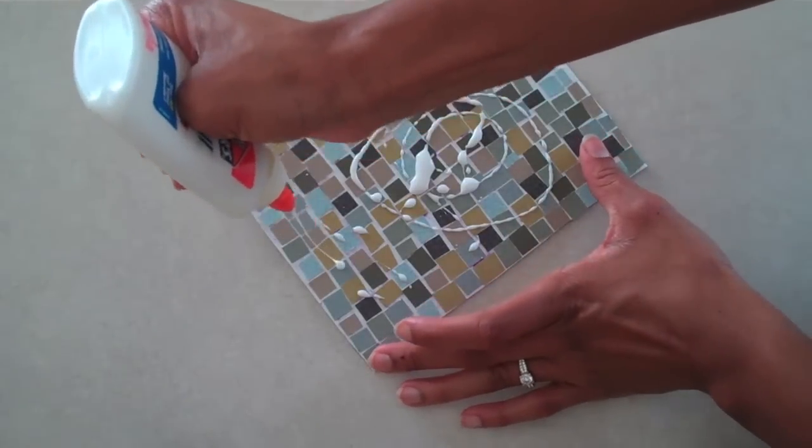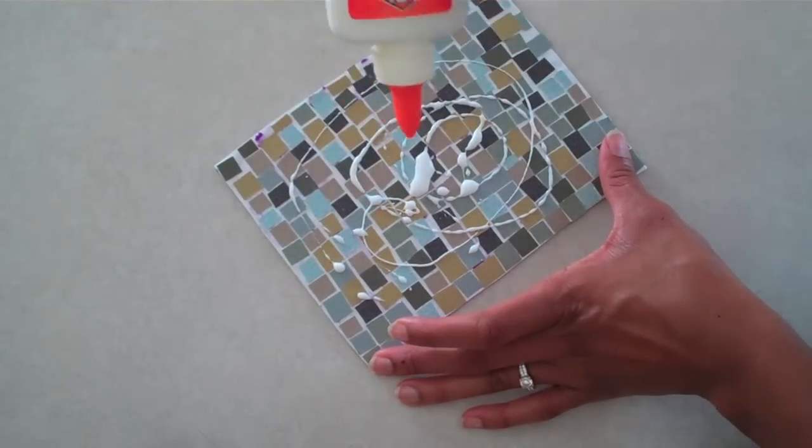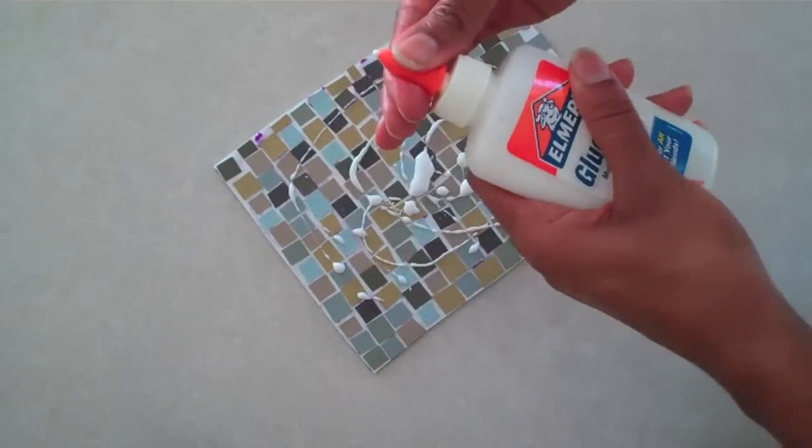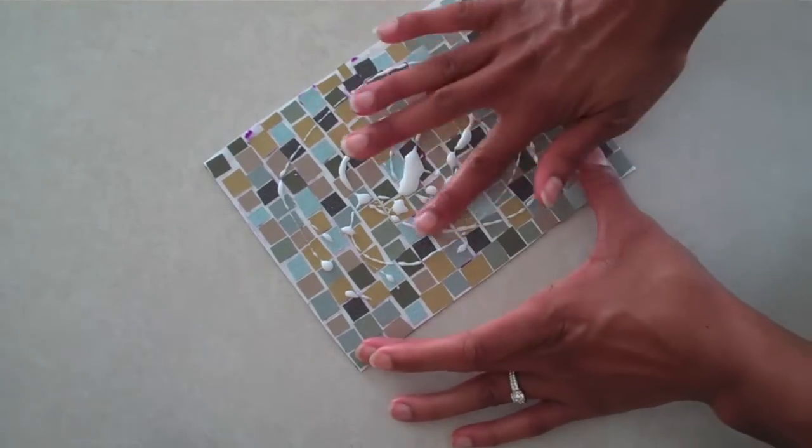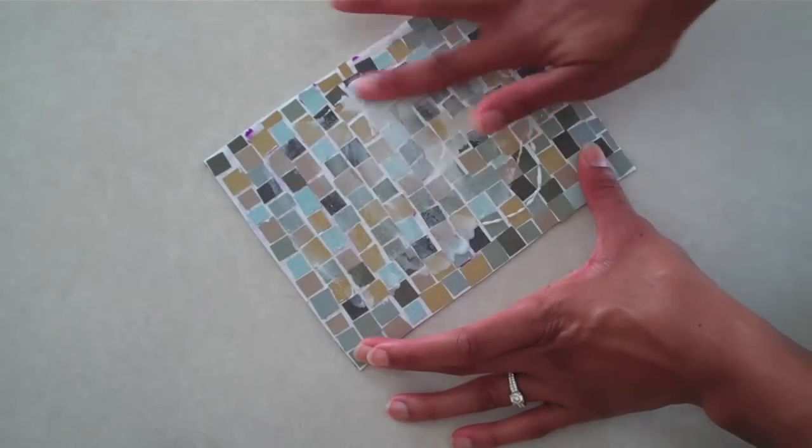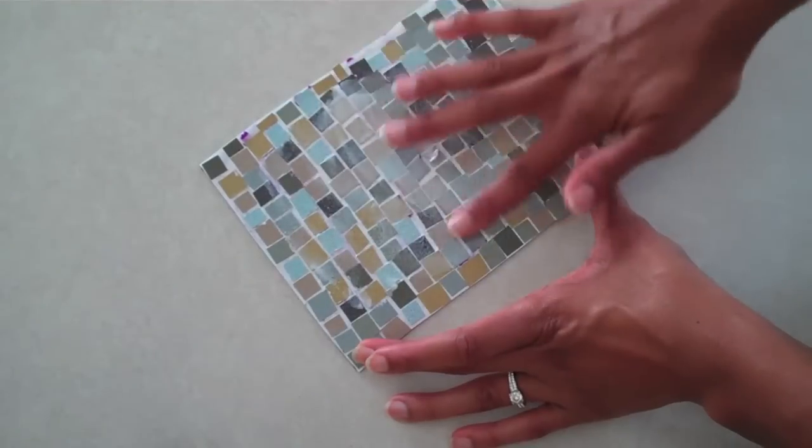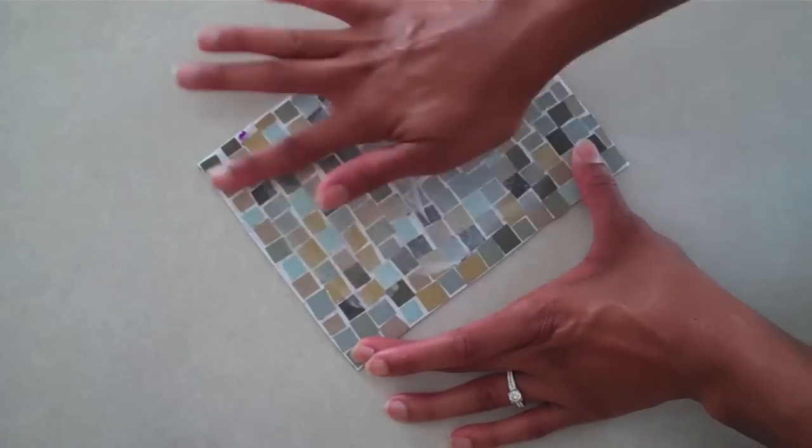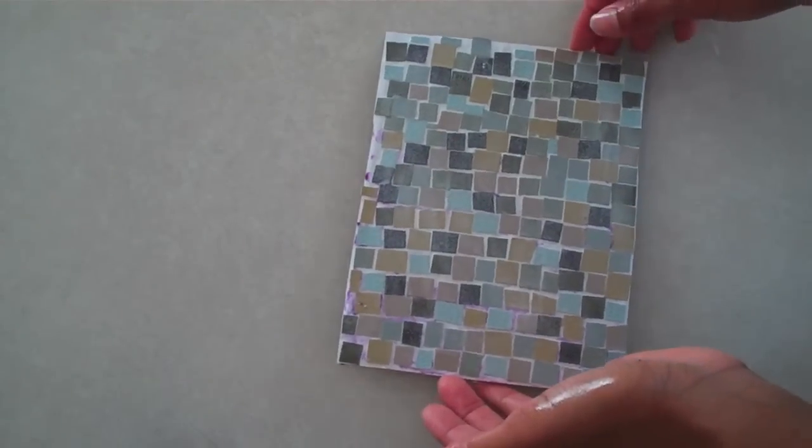After all my squares are glued down, I'm just going to do a thin layer of white school glue. I'm just going to smear it all over the top just to make sure everything is secured in place. Then allow it to dry.